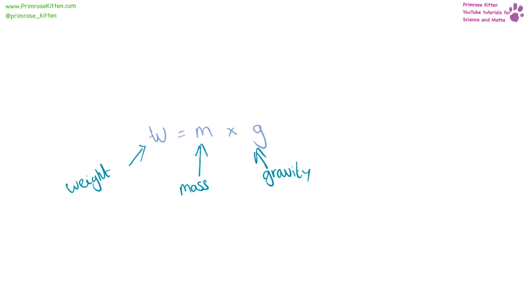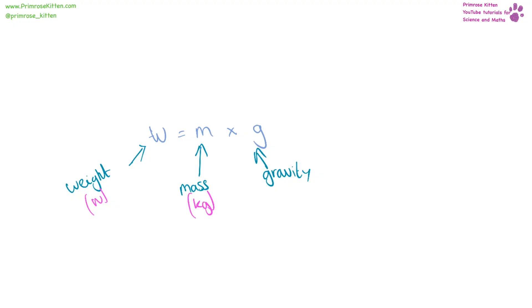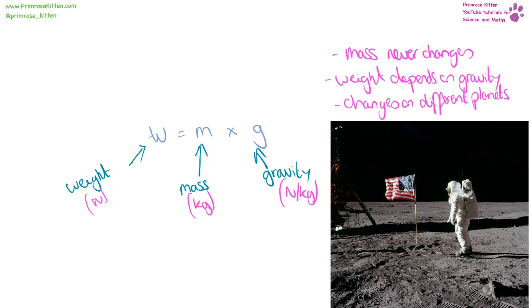Your weight is not the same as your mass, because your weight is equal to your mass times gravity. Your weight is measured in Newtons, your mass is measured in kilograms, and gravity is measured in Newtons per kilogram. So your mass will never change, but your weight will change depending on the planet and gravity — which is why when they went to the moon, they were basically weightless and could jump around.